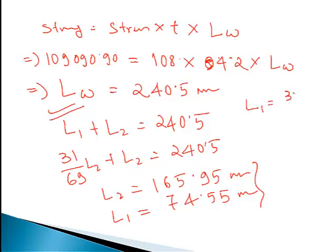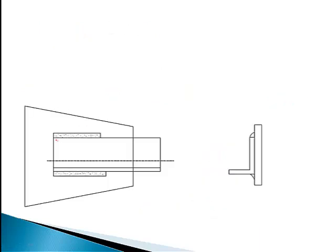Just put those values into the equation and you will get the answers. Draw the neat sketch showing L1 and L2 as the weld lengths on the two sides of the angle leg.